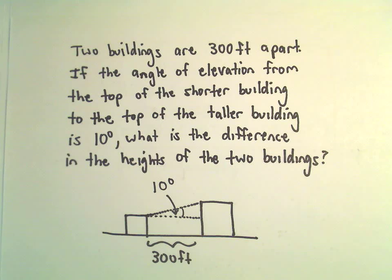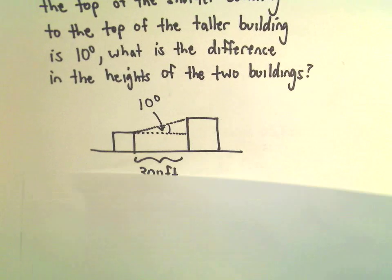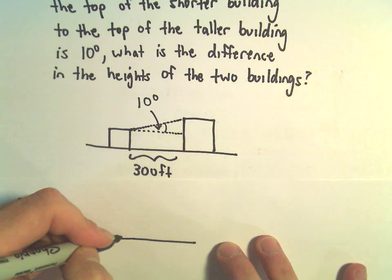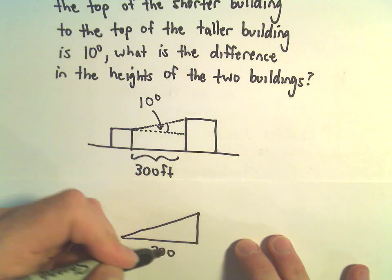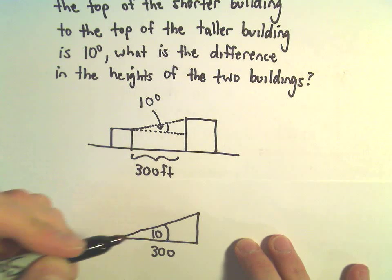Well all we have to do in this case is again just basically set up a little triangle using this information. The width of our triangle we know that's 300 feet. We know this little measurement is 10 degrees.